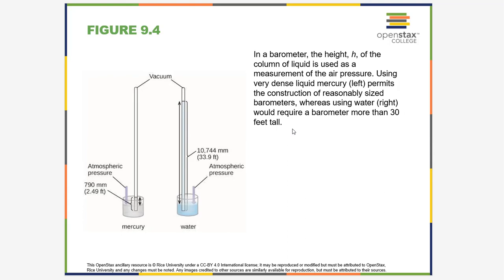To measure pressure we use a barometer — a device filled with mercury. If this end is open to the atmosphere, air hits it and applies force. Inside the tube there is a vacuum — the absence of air, or empty space — so no air is pushing down on that mercury surface. The mercury rises up 760 millimeters because the air is pushing down on the open surface.